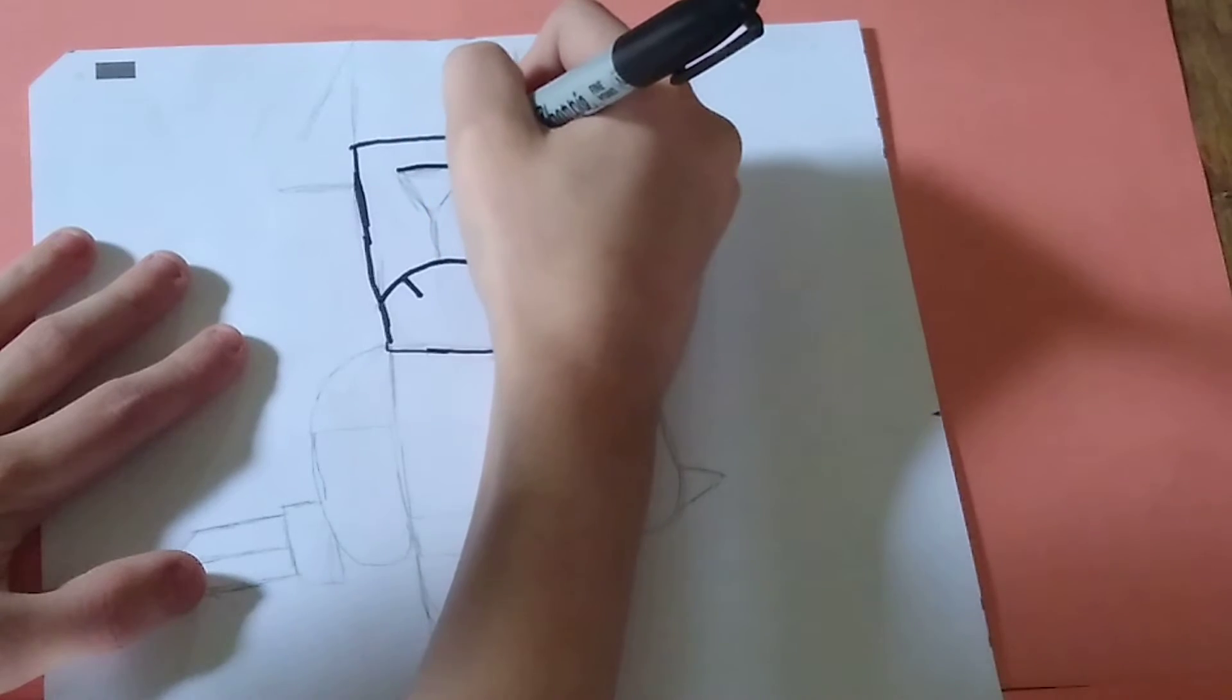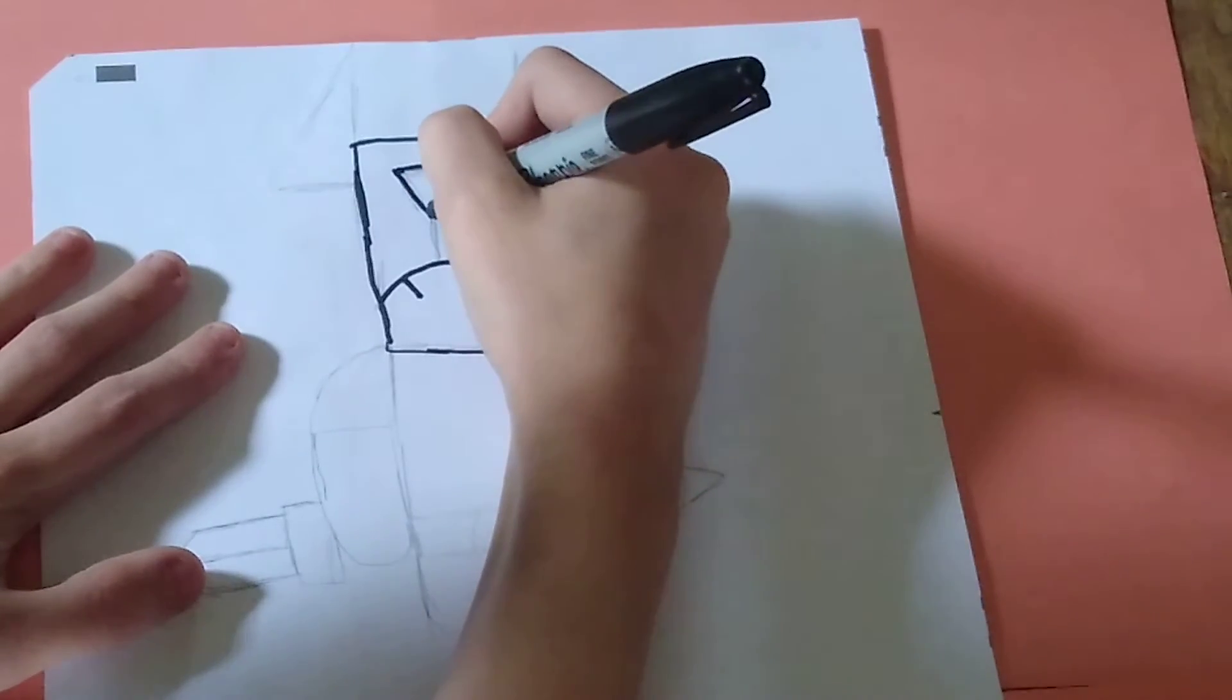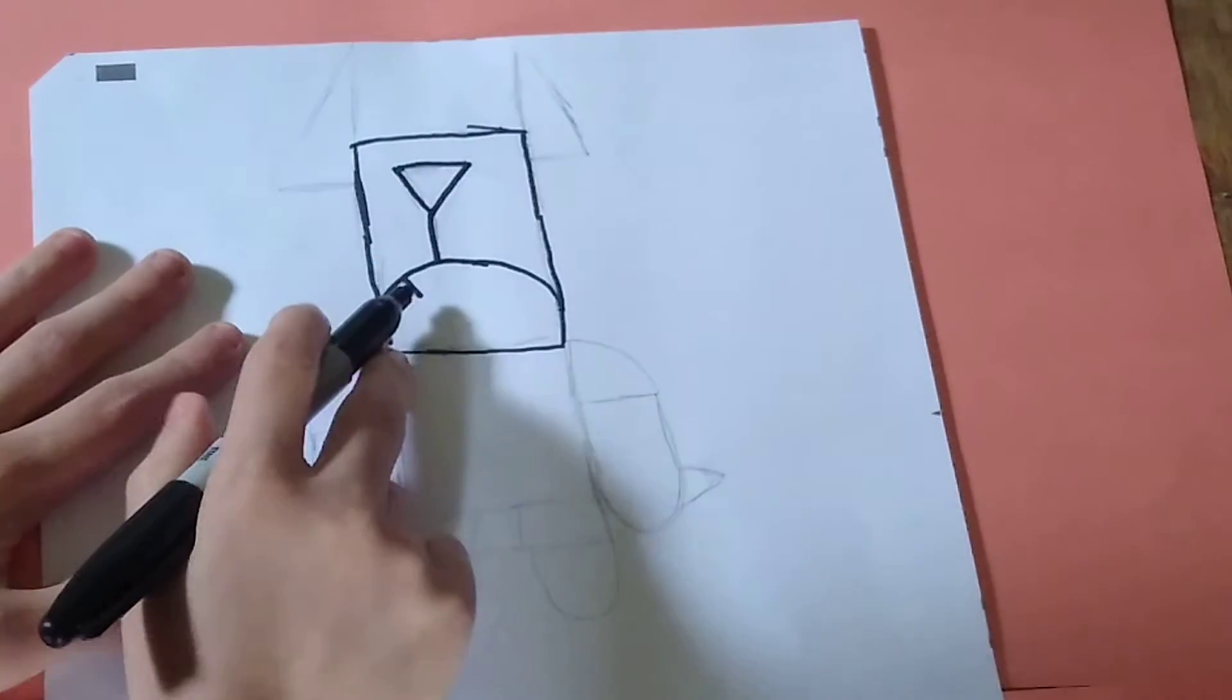What you're going to do is make this triangle up at the top, and then make a line from the triangle straight down into there like that.